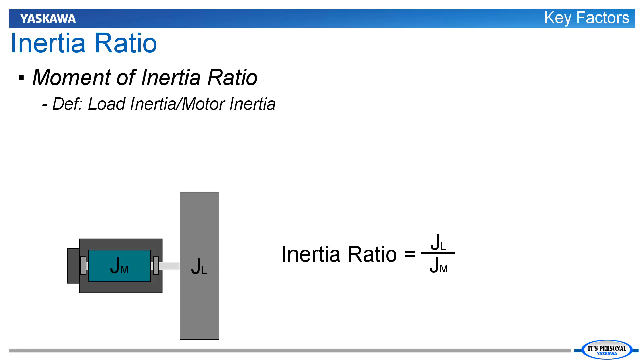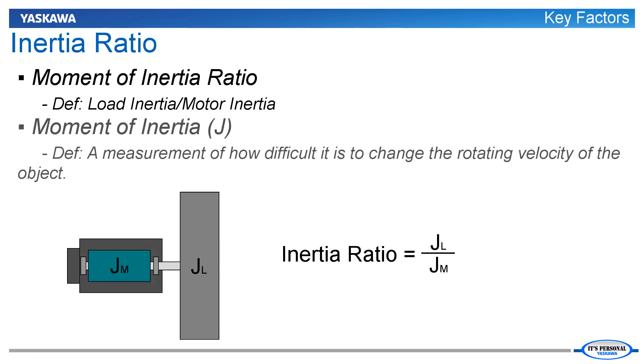Any rotating object has a moment of inertia. The moment of inertia is a measurement of how difficult it is to change the rotating velocity of that object. When sizing, the moment of inertia is often written with the letter J and is commonly referred to simply as inertia.